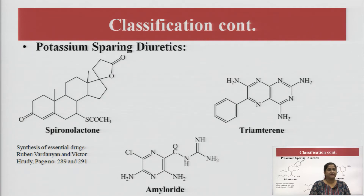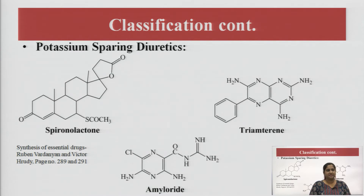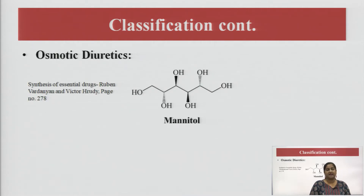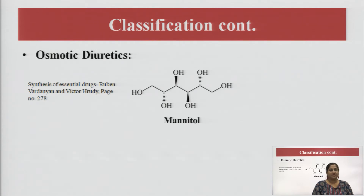The next class is potassium-sparing diuretics. In this class: spironolactone, triamterene, and amiloride — three drugs. We are going to discuss this class as well. The last class of diuretics is osmotic diuretics. In this class there is only one drug to discuss: mannitol.